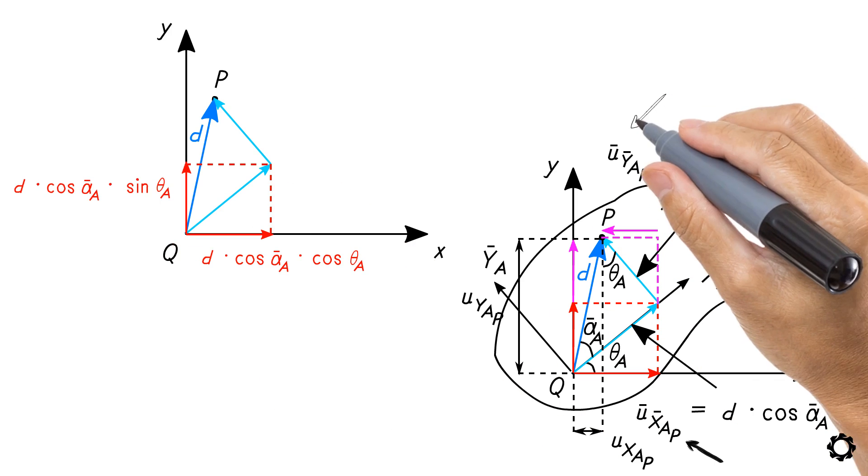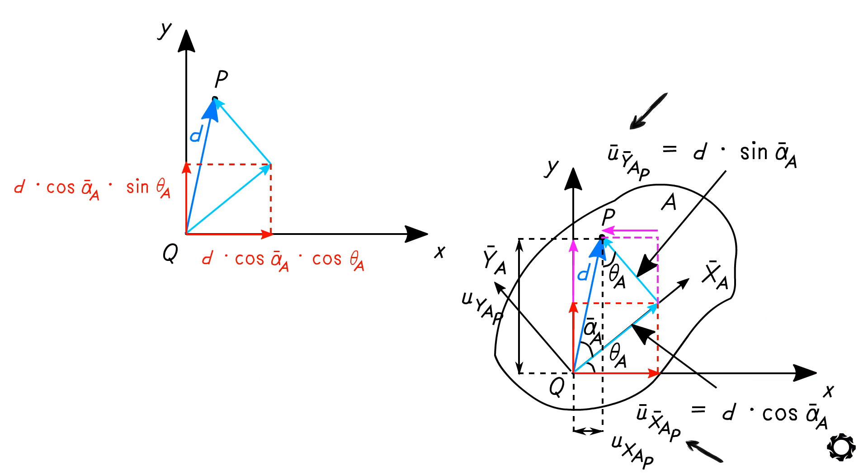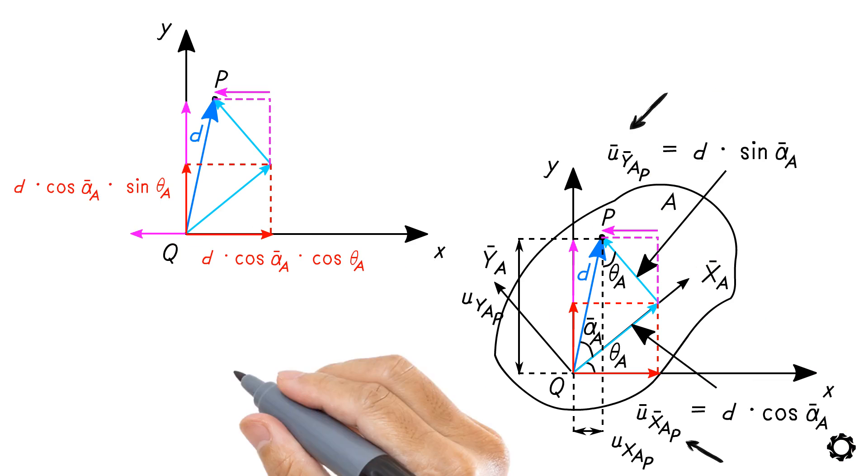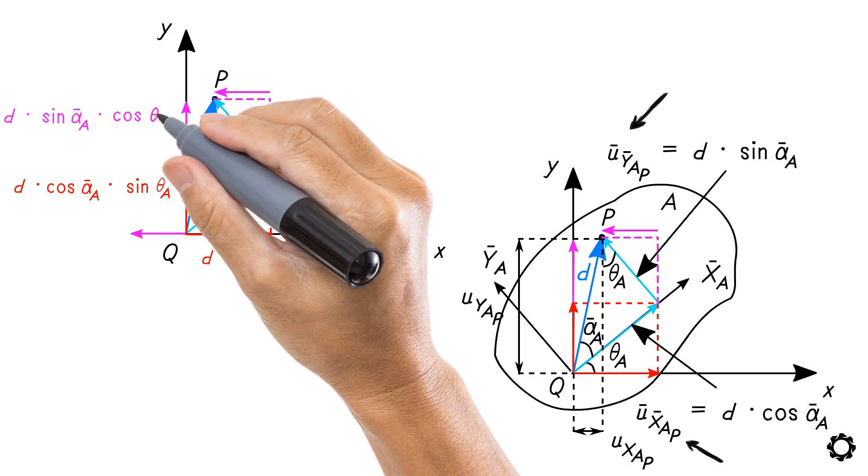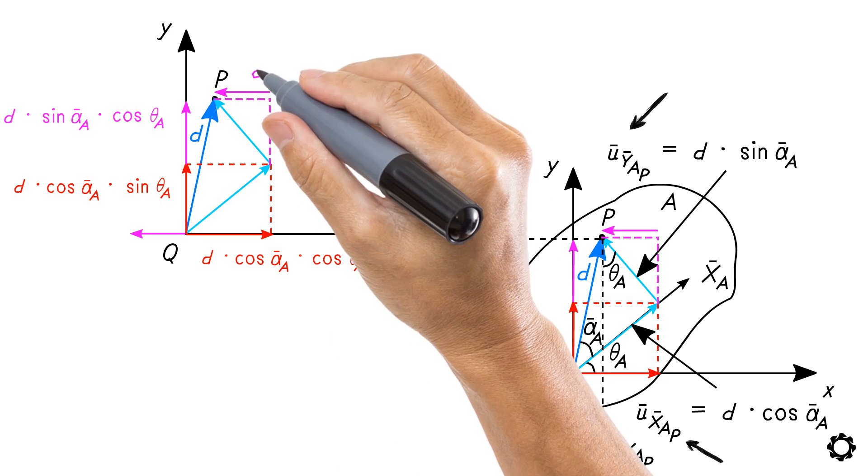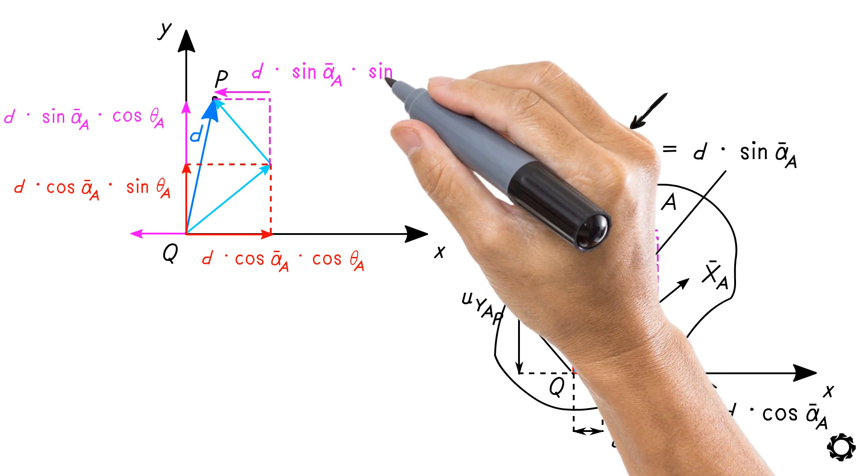Similarly, the component u̅_ȳ_ap also has projections on x and y: d·sin(ᾱ_a)·cos(θ_a) and d·sin(ᾱ_a)·sin(θ_a).